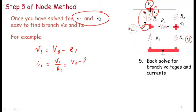And because V1 is V0 minus E1, I can replace V1 by V0 minus E1 and divide by R1. That gives me I1. So in this manner,